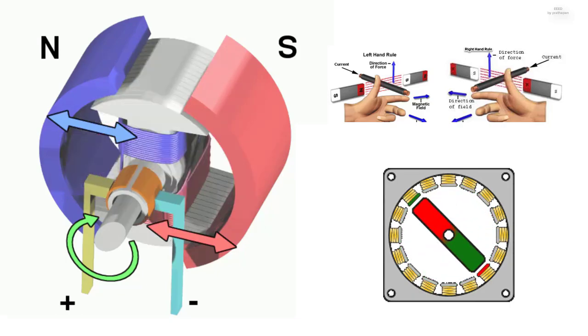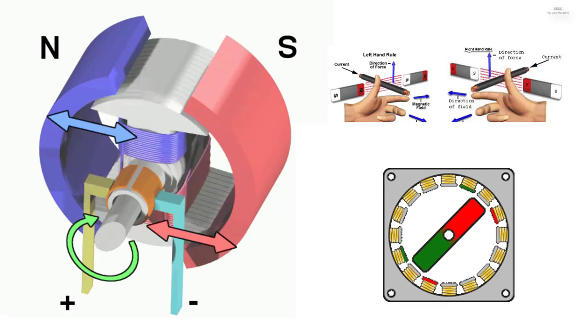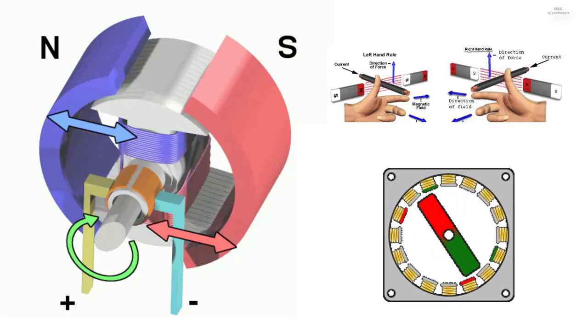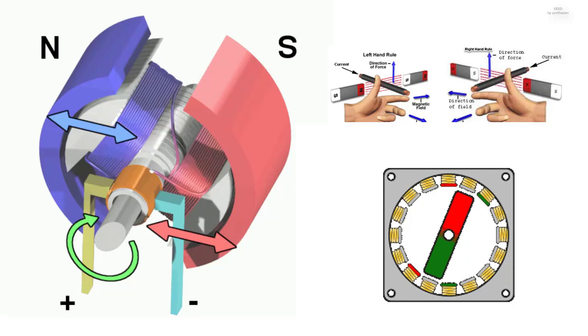In an electric generator, the motion and magnetic field exist (causes), and they lead to the creation of the electric current (effect), and so the right hand rule is used.